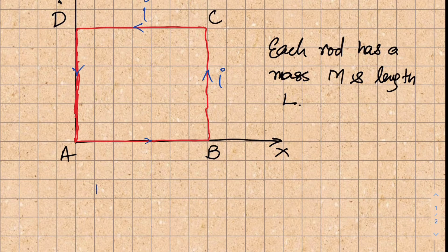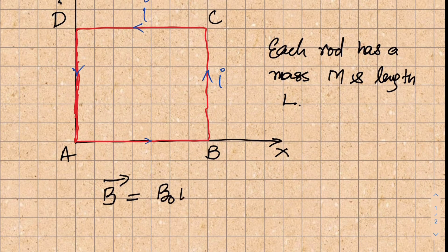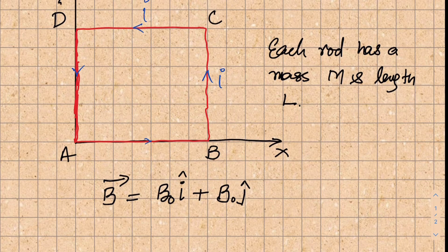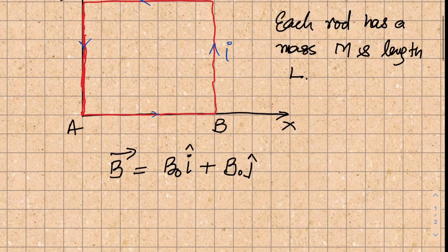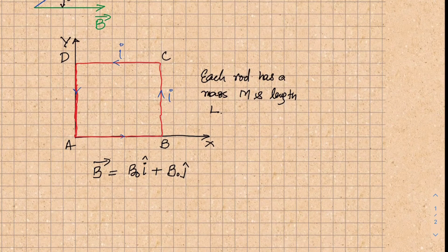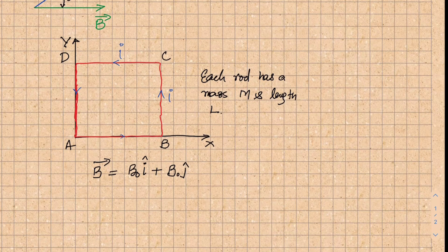The current in the frame is flowing anticlockwise. In this same region there is also a magnetic field given as B equal to B-naught i-cap plus B-naught j-cap. So this magnetic field is given, and you also have this square-shaped wire frame.